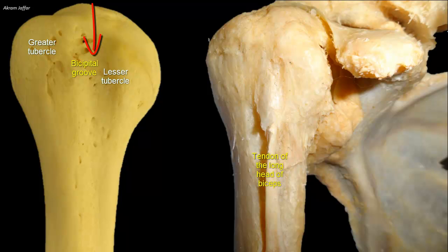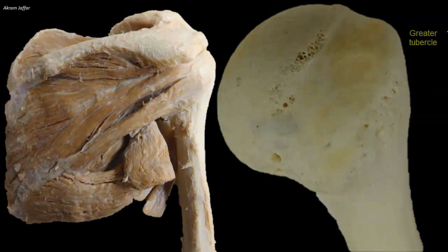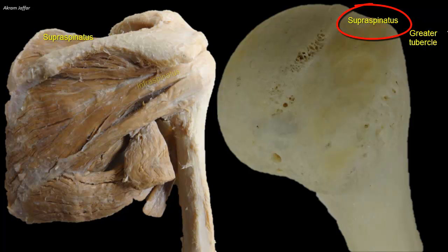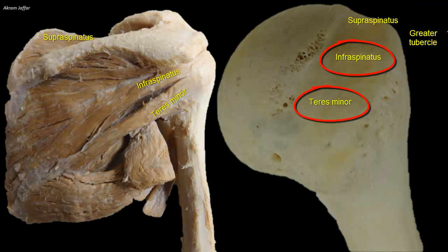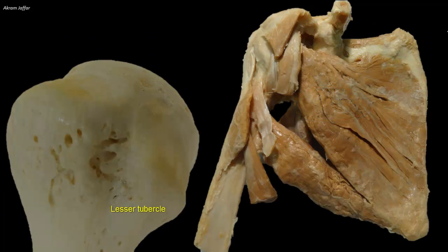The long head of biceps arises from the supraglenoid tubercle of the scapula within the capsule of the shoulder joint. The greater tubercle has three smooth facets for the insertion of scapular rotator cuff muscles: superiorly is the facet for supraspinatus, behind this the facet for infraspinatus, and posteriorly the lowest facet receives teres minor muscle. The lesser tubercle carries a facet for the attachment of the fourth and last of the rotator cuff muscles, subscapularis.